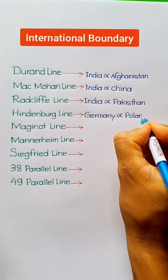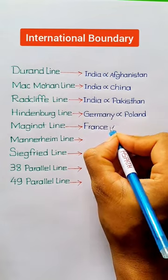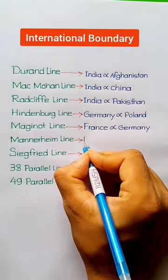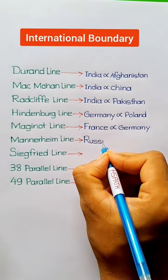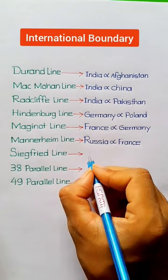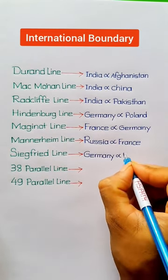Hindenburg Line — Germany and Poland. Maginot Line — France and Germany. Mannerheim Line — Russia and France. Siegfried Line — Germany and France.